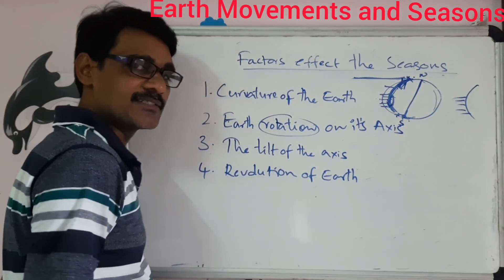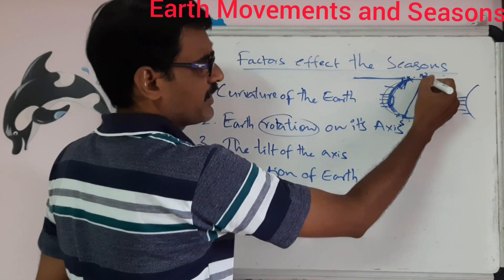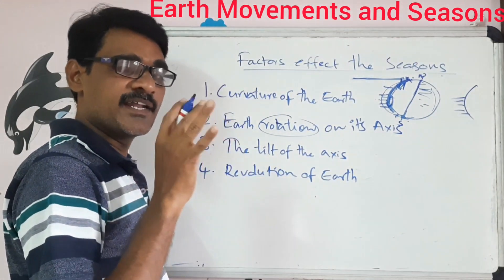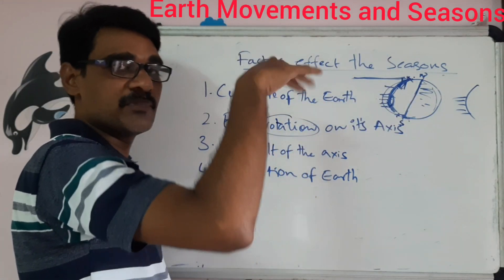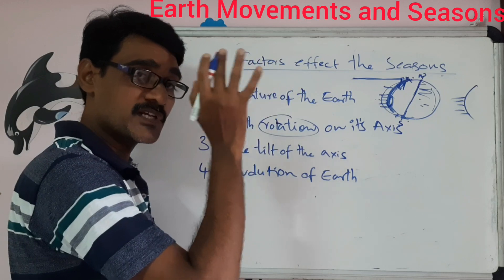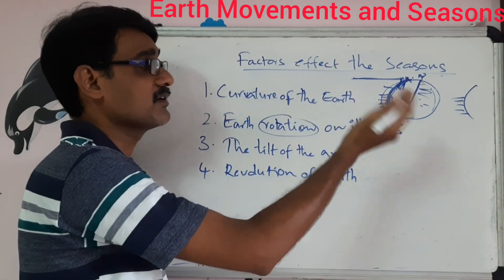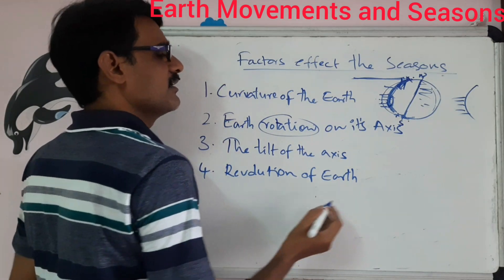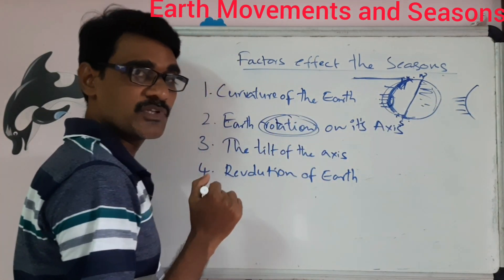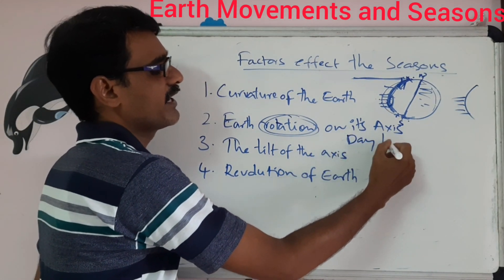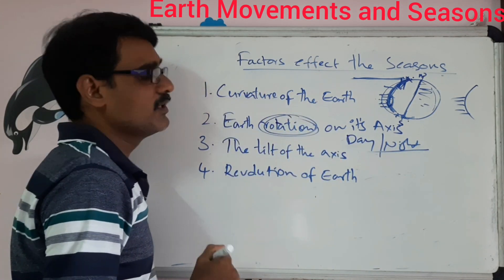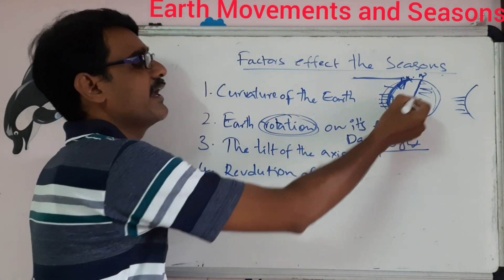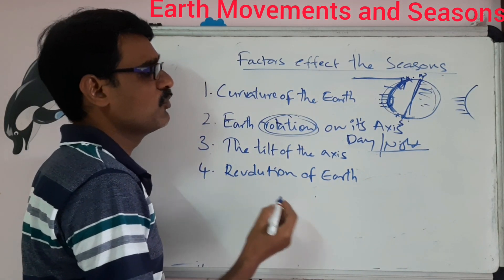Due to rotation, only half part of the earth is receiving light from the sun at any time. The back side of the earth is not receiving sunlight at the same time as the front side. Due to the rotation of the earth on its own axis, day and night occur.